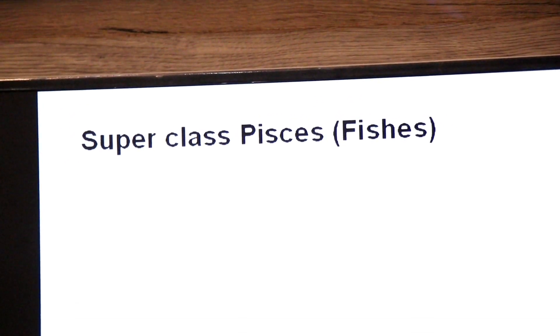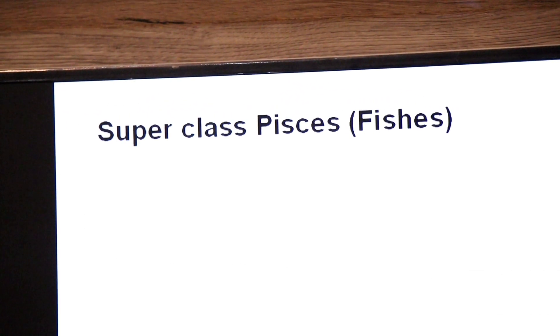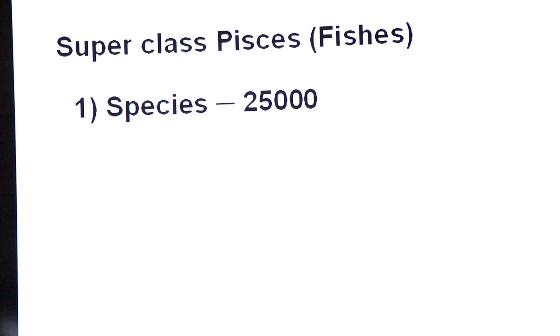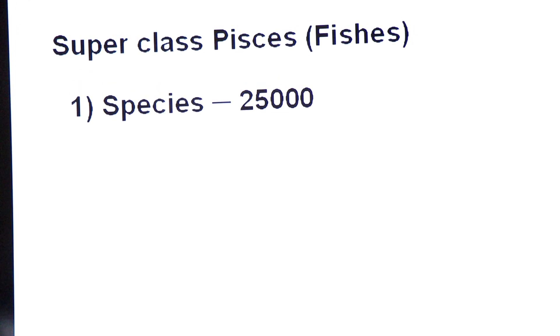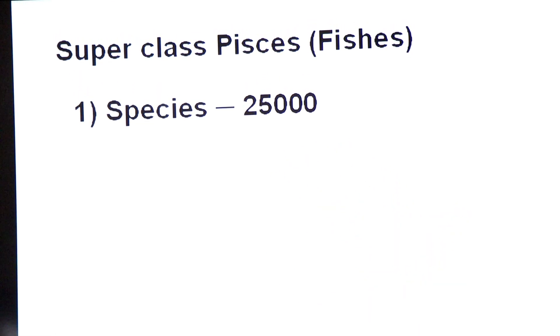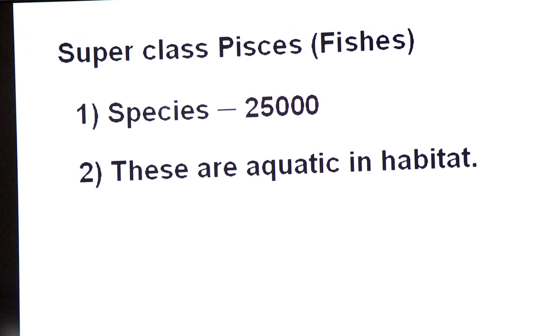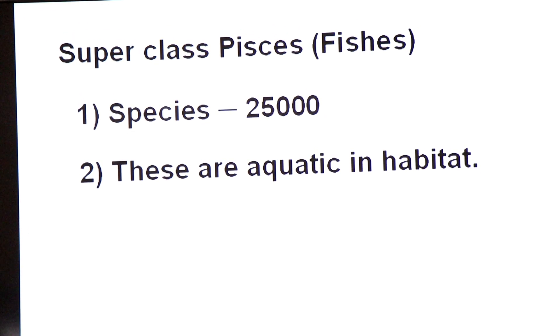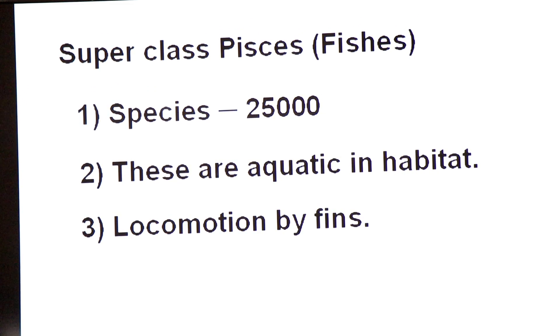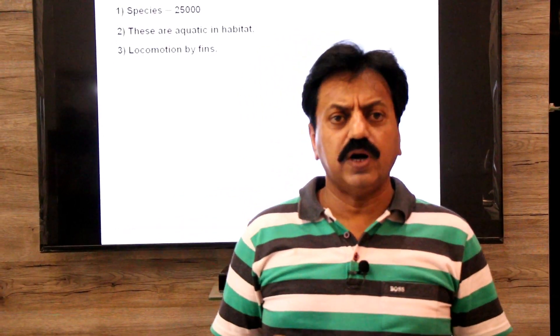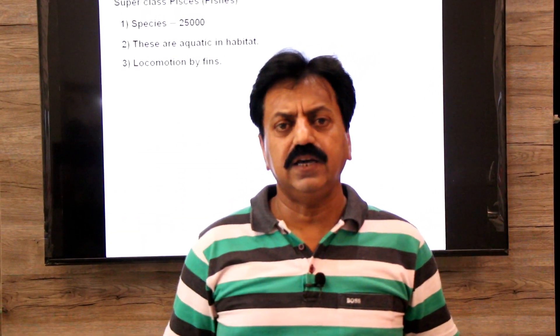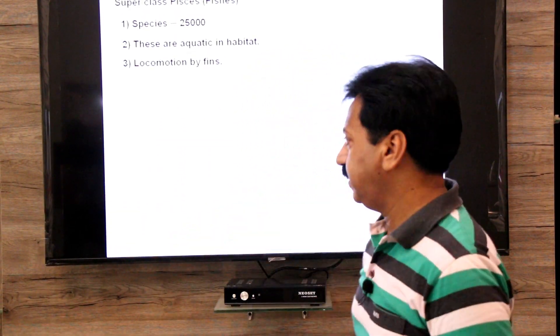Superclass Pisces — fishes. Fishes include 25,000 species. They are aquatic in habitat, meaning they live in water. Locomotion is by fins. The locomotory organs of Pisces are fins. We will now read the definition of fins and the different types of fins.